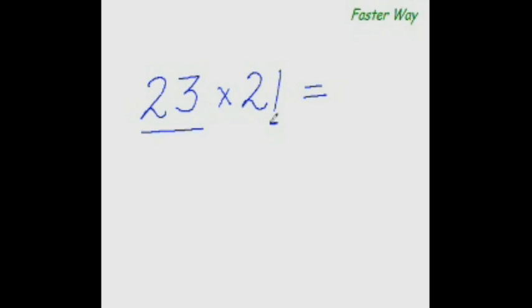So 23 plus 1 is 24 and double of 24 is 48. So I will write 48 here. Now one more digit to go, for that 3 times 1 is 3. So I will write 3 here. So the answer is 483. As simple as that.